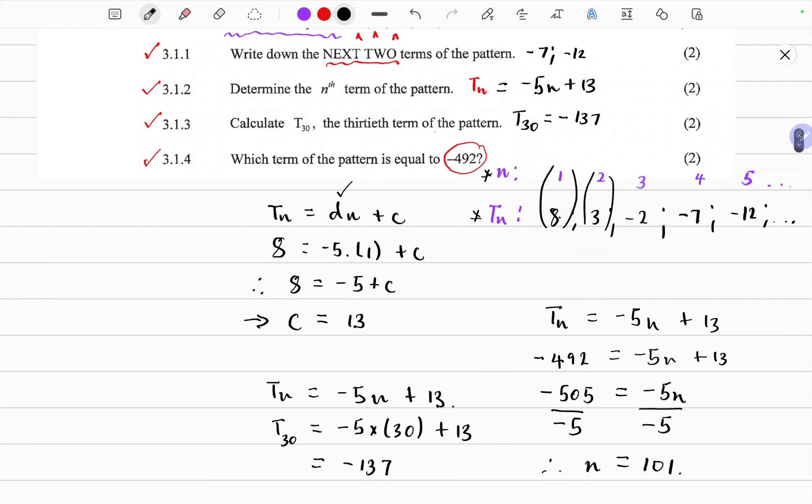So this is at position 101. So in the number pattern, position 101 is the term, minus 492. Thank you so much for watching.